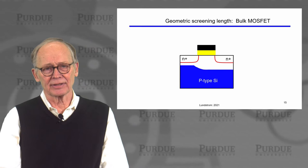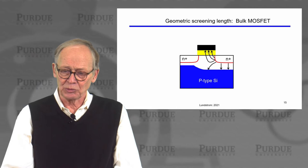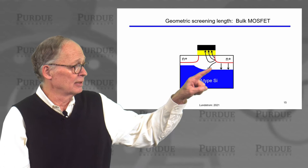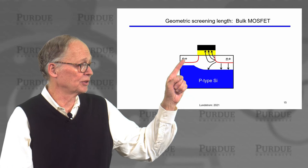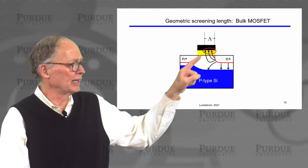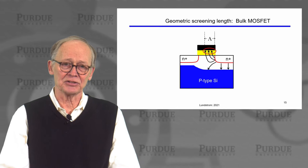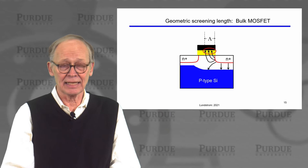In a MOSFET, there is a different type of screening — geometric screening. We have a metal gate on top and a conductive substrate below. When we apply a voltage on the drain, positive electric field lines emanate from the positive charges and must terminate somewhere. We want them to terminate on the substrate or the metal gate, and we want to make sure they do not penetrate far over to the source — where they could pull electrons out of the source, lowering the barrier and causing problems. The distance over which those field lines from the drain penetrate is called the geometric screening length.